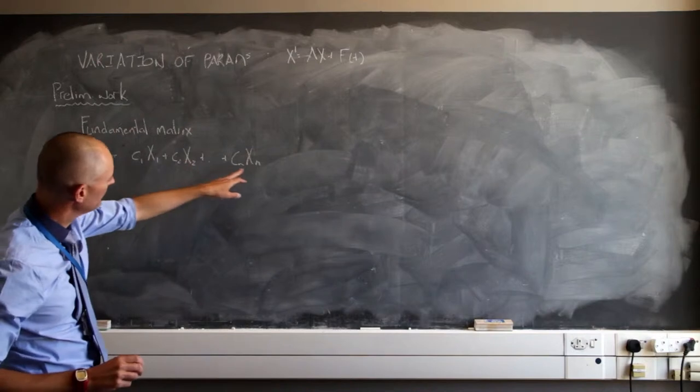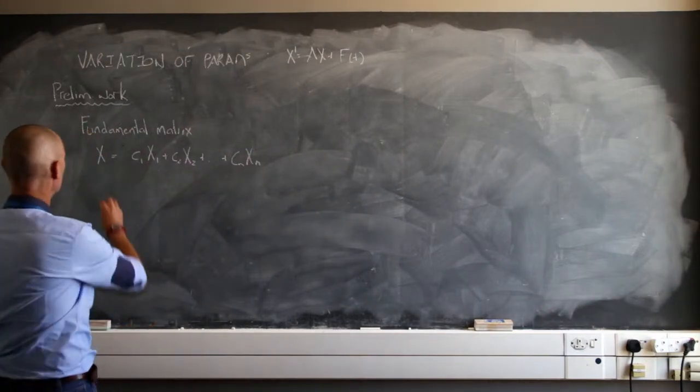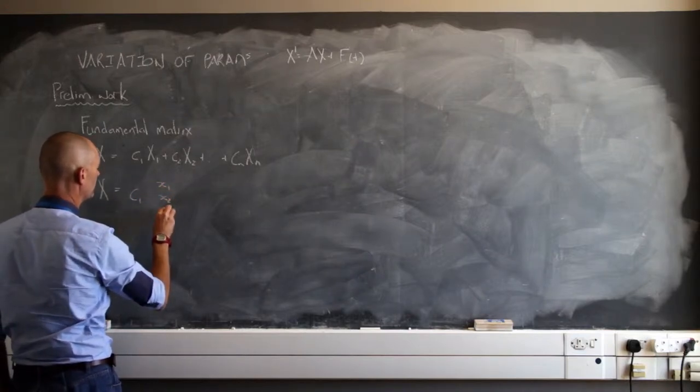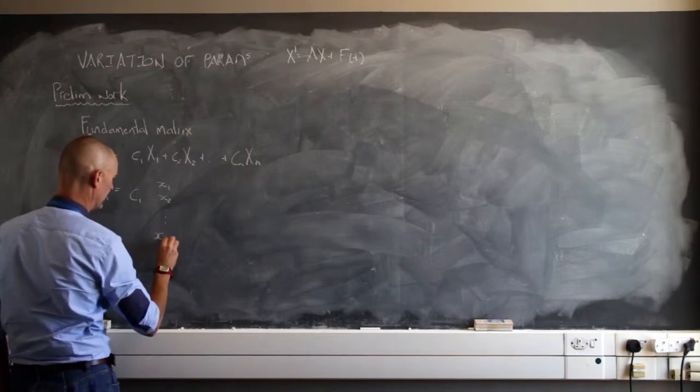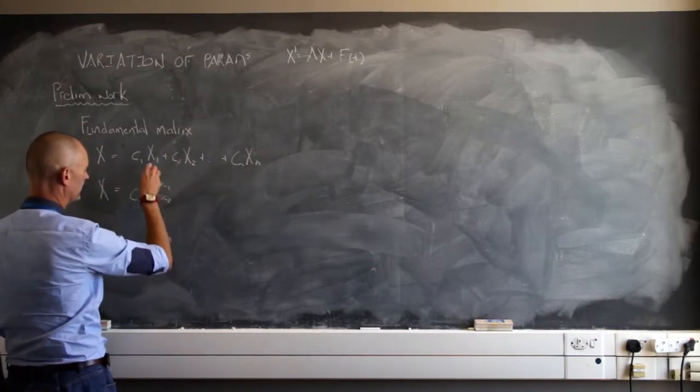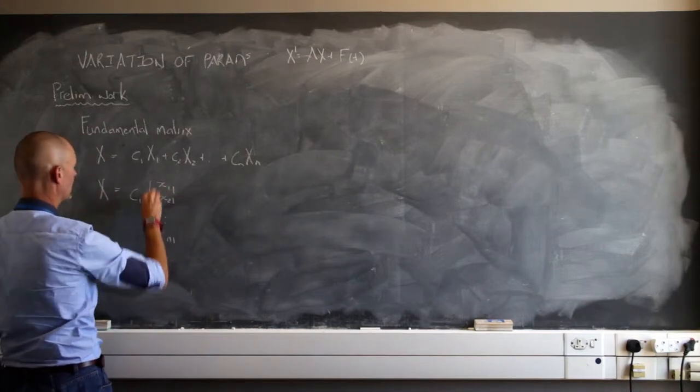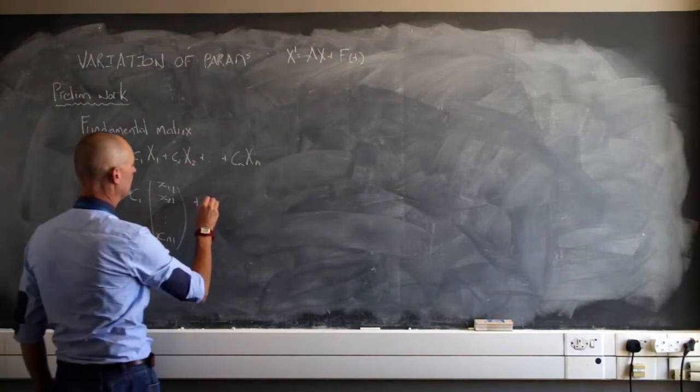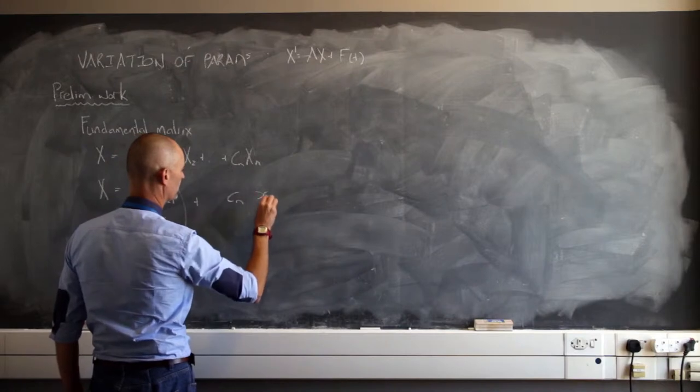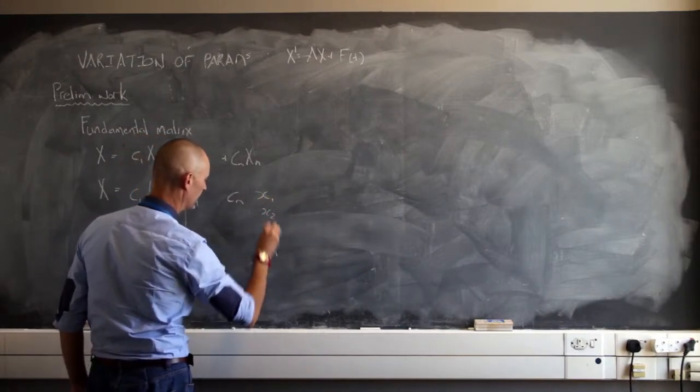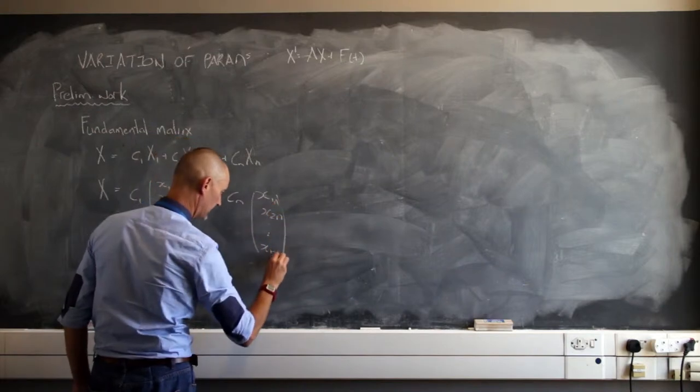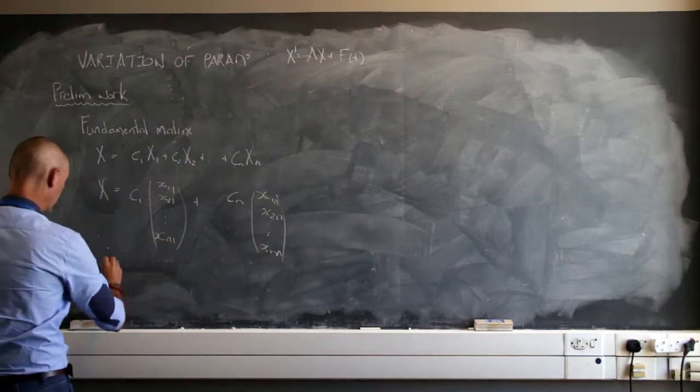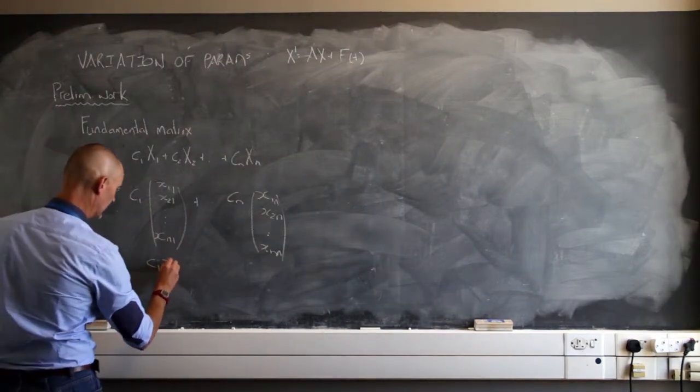Note that x sub 1 can be written as this column matrix with x sub 1,1, x sub 2,1 all the way to x sub n,1. And I can multiply c sub 1 into that as well, so I'll have c sub 1 x sub 1,1